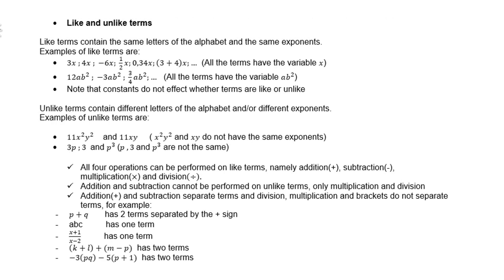Like and unlike terms. Like terms contain the same letters of the alphabet and the same exponents. Examples of like terms are 3x, 4x, -6x, ½x, 0.34x, (3+4)x - all the terms have the same variable x. 12ab², -3ab², ¾ab² - all the terms have the same variable ab². Note that constants do not affect whether the terms are like or unlike.